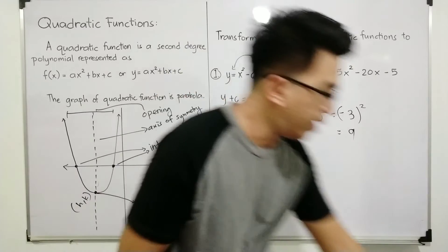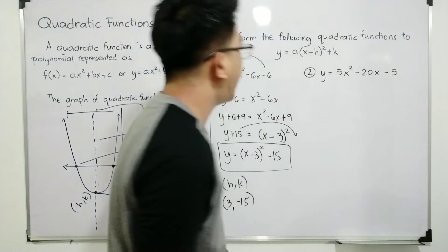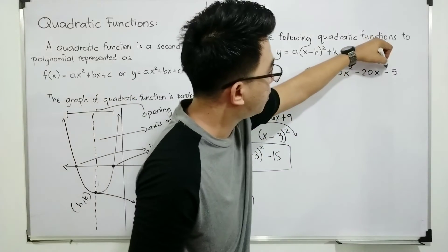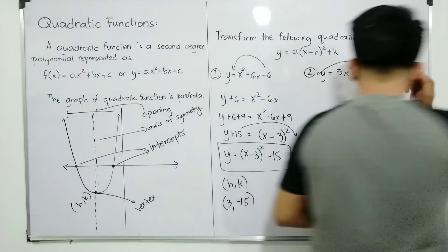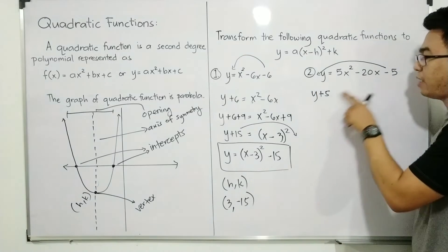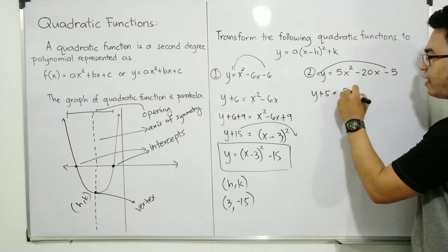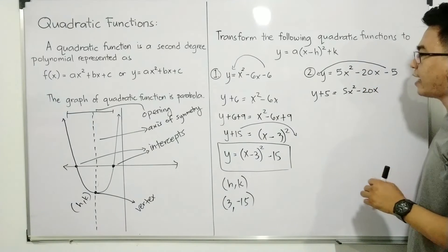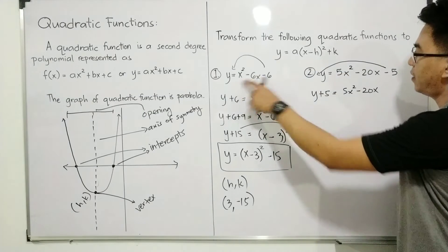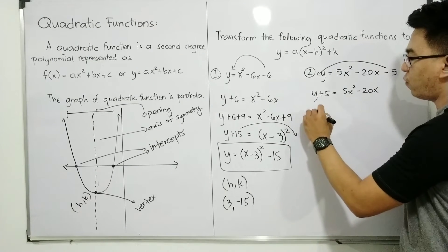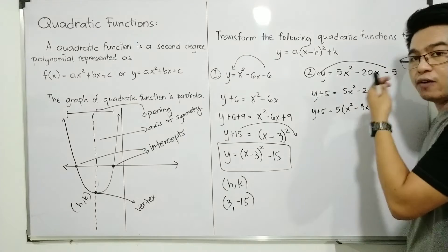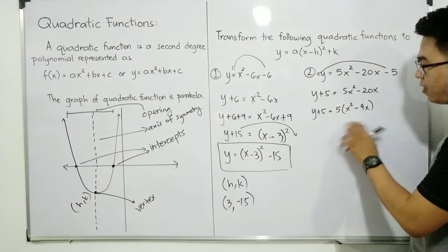Now let's move on with item number 2. For item number 2, we have y is equal to 5x squared minus 20x minus 5. The first step is to transpose negative 5 to the other side of the equation, and it will give us y plus 5 — from negative it became positive — is equal to 5x squared minus 20x. This is quite different from the first example because we now have the coefficient of 5 instead of 1. So what you will do is factor out 5, giving you y plus 5 is equal to 5 times x squared minus 4x.